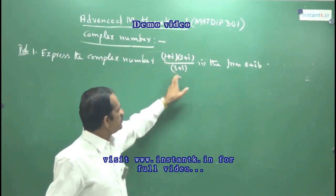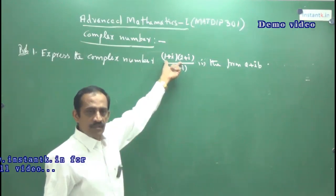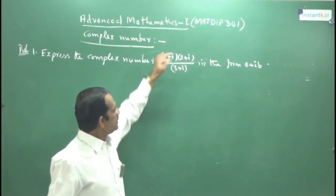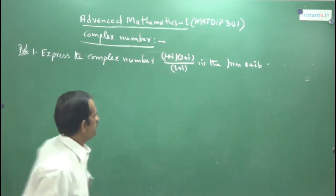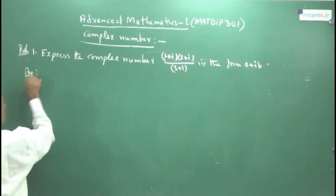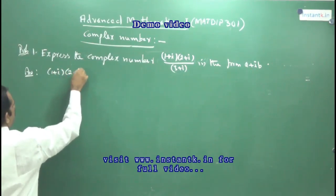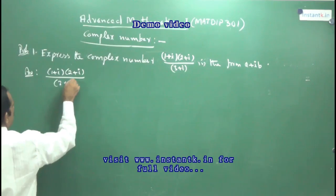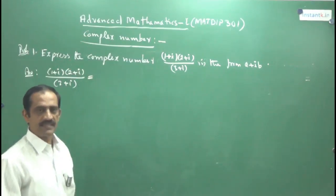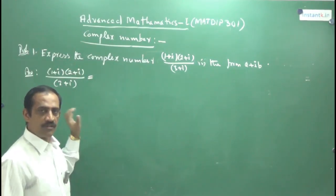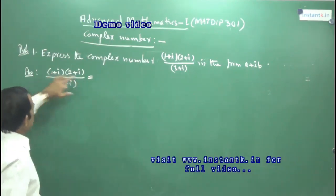But the numerator also has a product, so first it is better to write the numerator in terms of x plus iy. Take the given problem: 1 plus i into 2 plus i divided by 3 plus i. First, write the numerator in standard form. Don't take the conjugate here — you only take the conjugate for what is in the denominator. In the numerator, just multiply the two complex numbers.